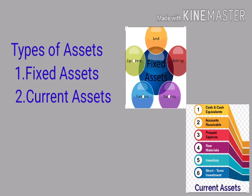Assets are generally classified into two types: number one is fixed assets, and number two is current assets. Fixed assets are those assets which can be used for a long period of time — for example, land, building, furniture, and machinery. Current assets are those assets which can only be used within one year or a very short period of time — for example, cash in hand, cash at bank, marketable securities, etc.